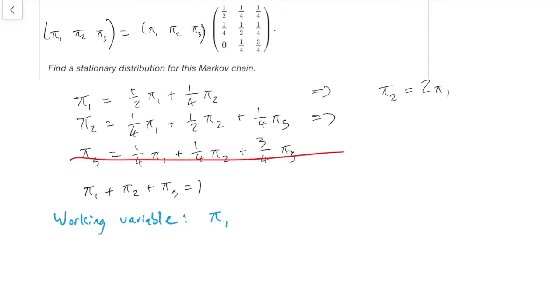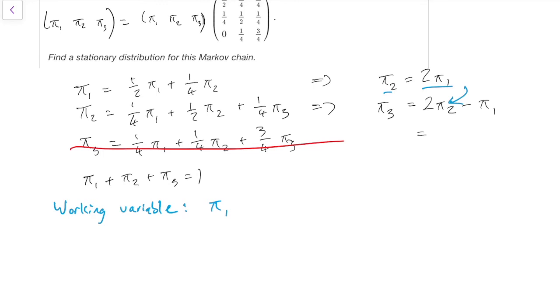For this second equation, I guess π₃ I'll want by itself. So I'll multiply everything up by 4, leave the π₃ by itself, to get π₃ equals the half π₂ multiplied by 4, it becomes 2π₂. The one-quarter π₁ over to the other side is minus, times it by 4 goes up to 1. So that's 2π₂ minus π₁. But I wanted to solve just in terms of the working variable π₁. So here I can substitute the 2π₁ equals π₂ into there. So this becomes 2π₂ becomes 4π₁. So this is 4π₁ minus π₁ equals 3π₁.